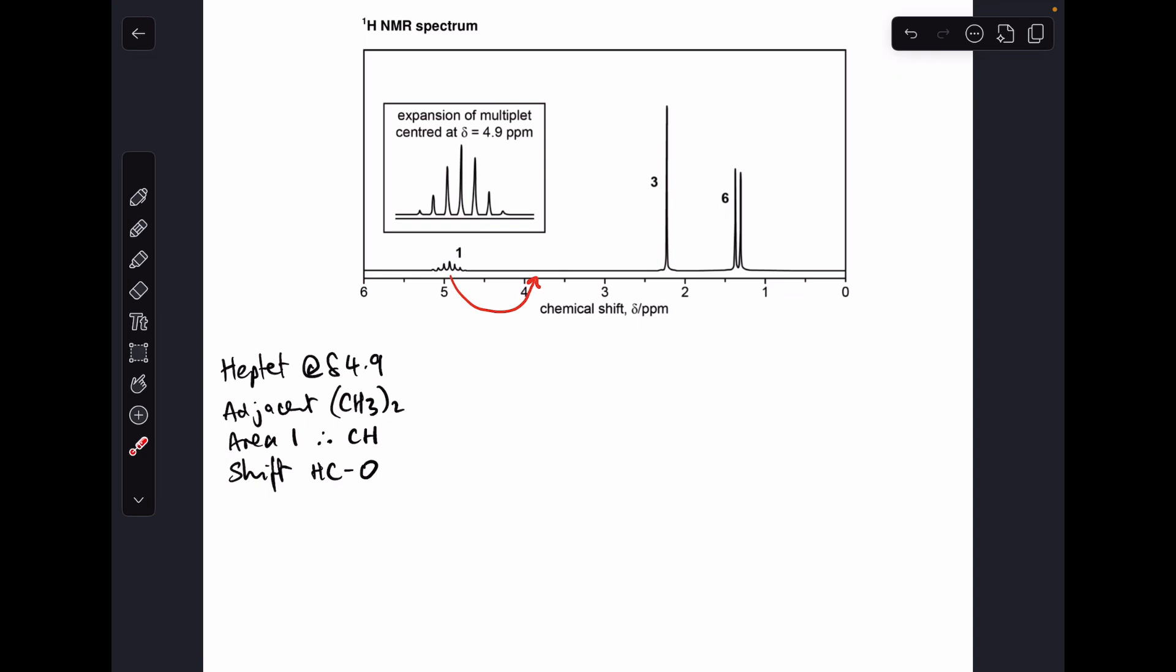The area means that there's one proton causing this signal and the shift value, remember we've got to treat the shift value as 3.9, that's indicative of H to C to single bond O. So we can draw up that little part of the molecule. This single hydrogen bonded to the carbon single bonded to the oxygen has caused that signal and adjacent to it are these two equivalent CH3 groups. We've got that part of the molecule sorted.